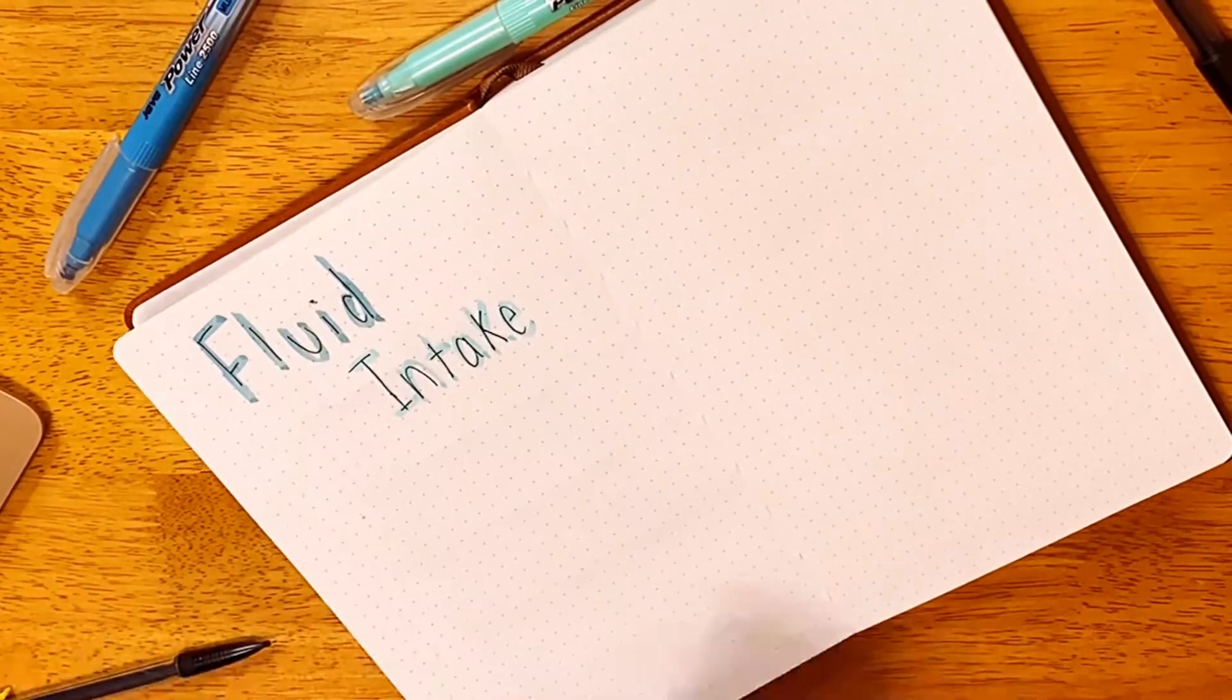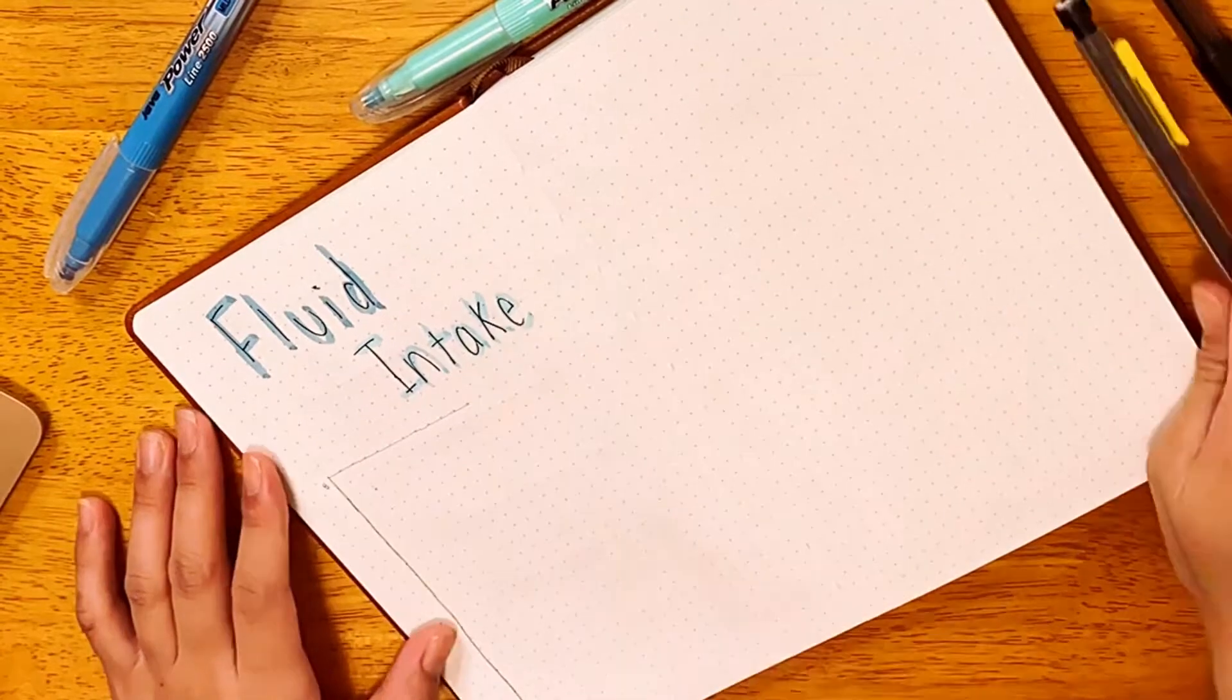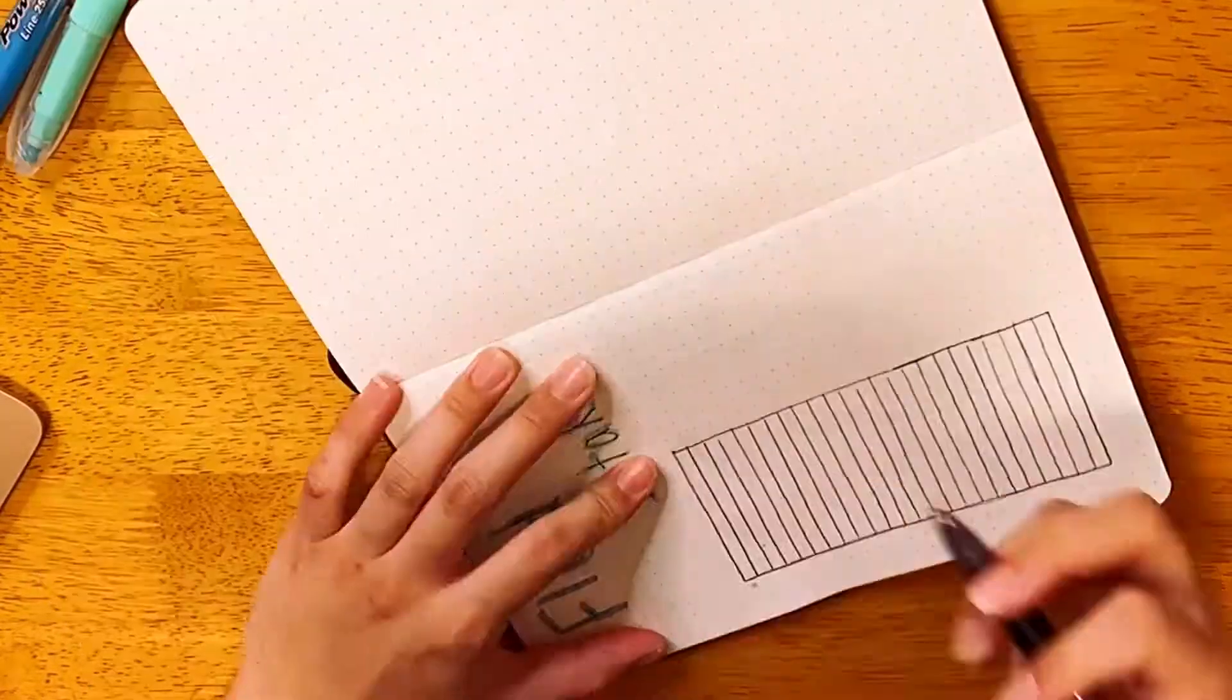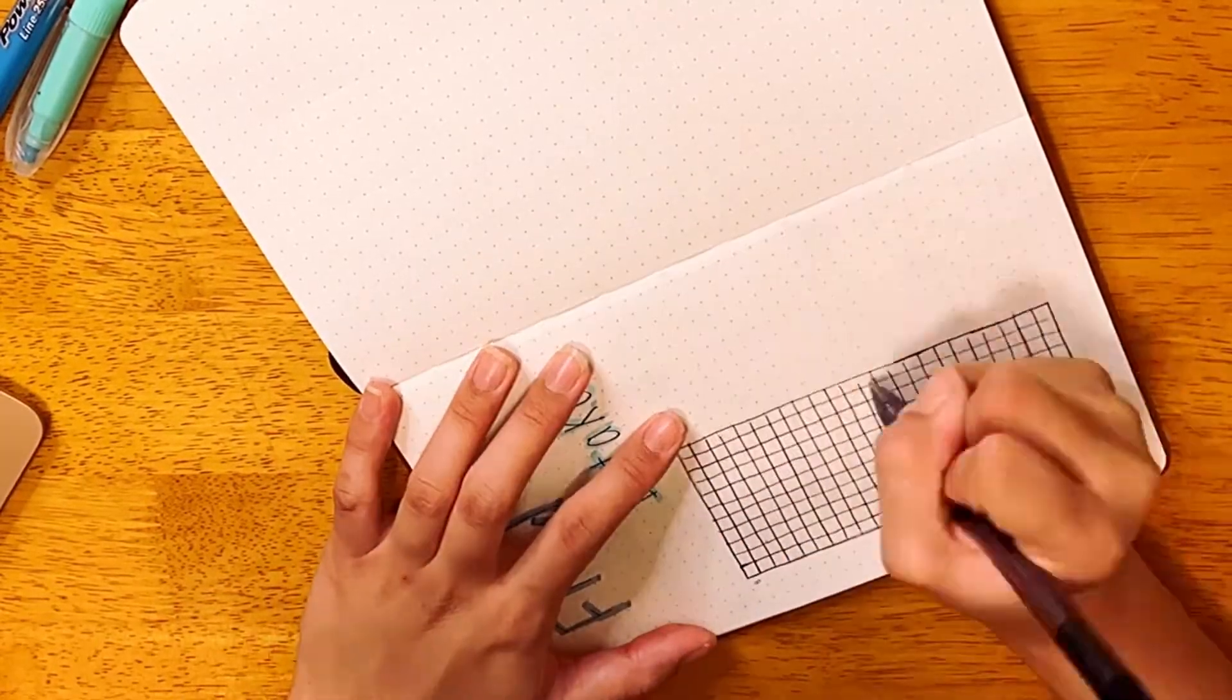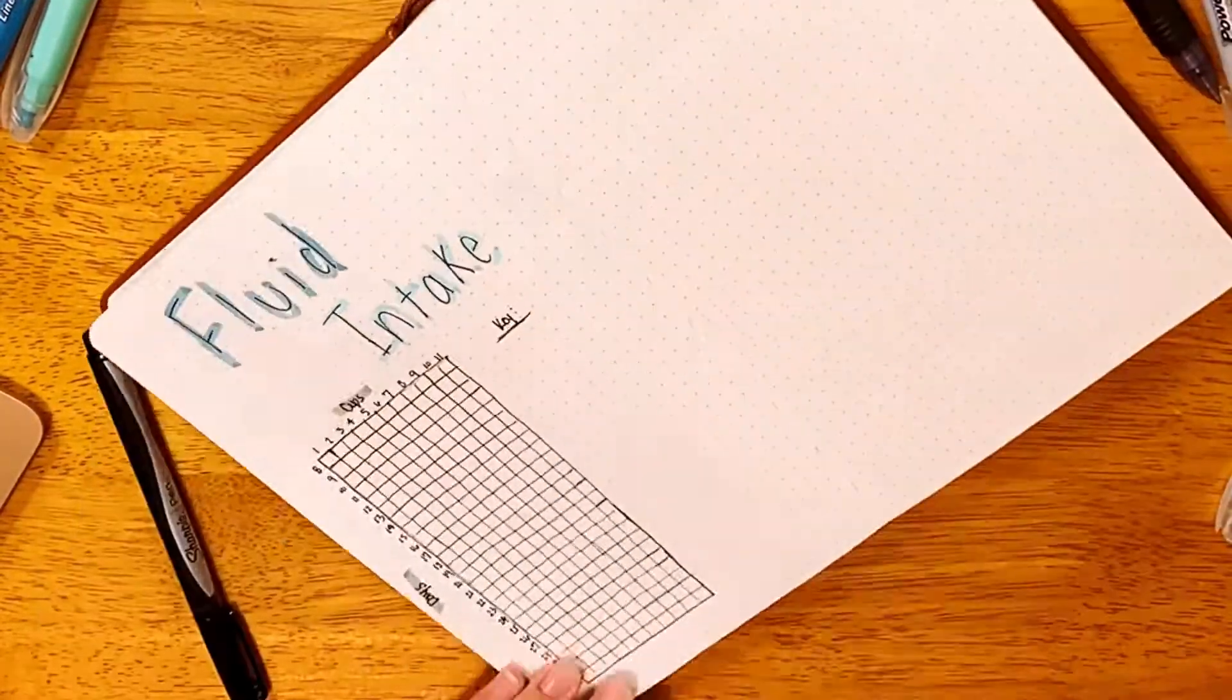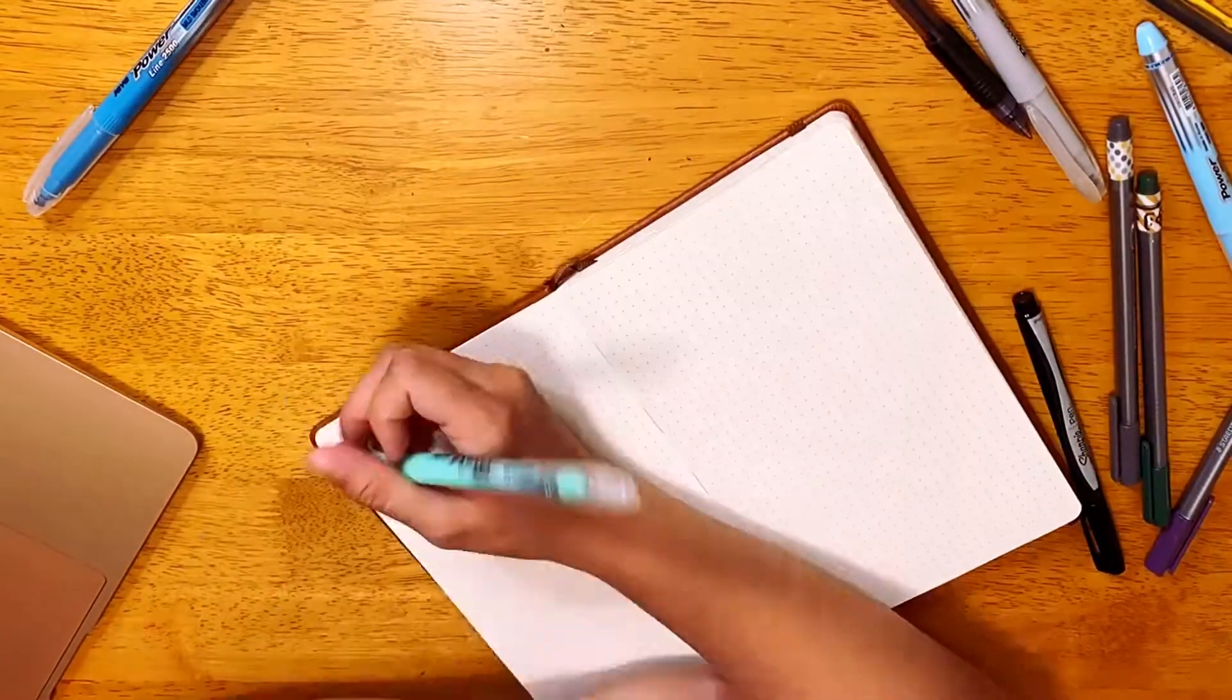I decided to add a few habit trackers. The first one being fluid intake. Since I am breastfeeding, I really want to keep up with my supply and I want to make sure that I'm drinking the correct amount of water and enough water throughout the day. Sometimes I just get so busy taking care of the kids that I really forget to drink water.